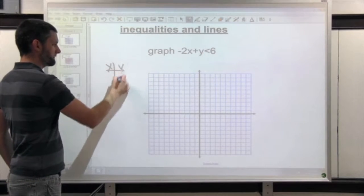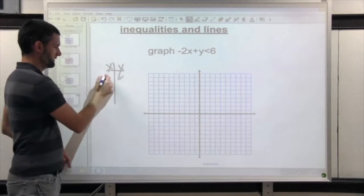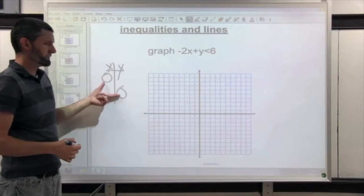First thing, like when we're graphing slope-intercept, you're just going to begin as if it's an equation. And how do we graph standard form? We make a t-table.